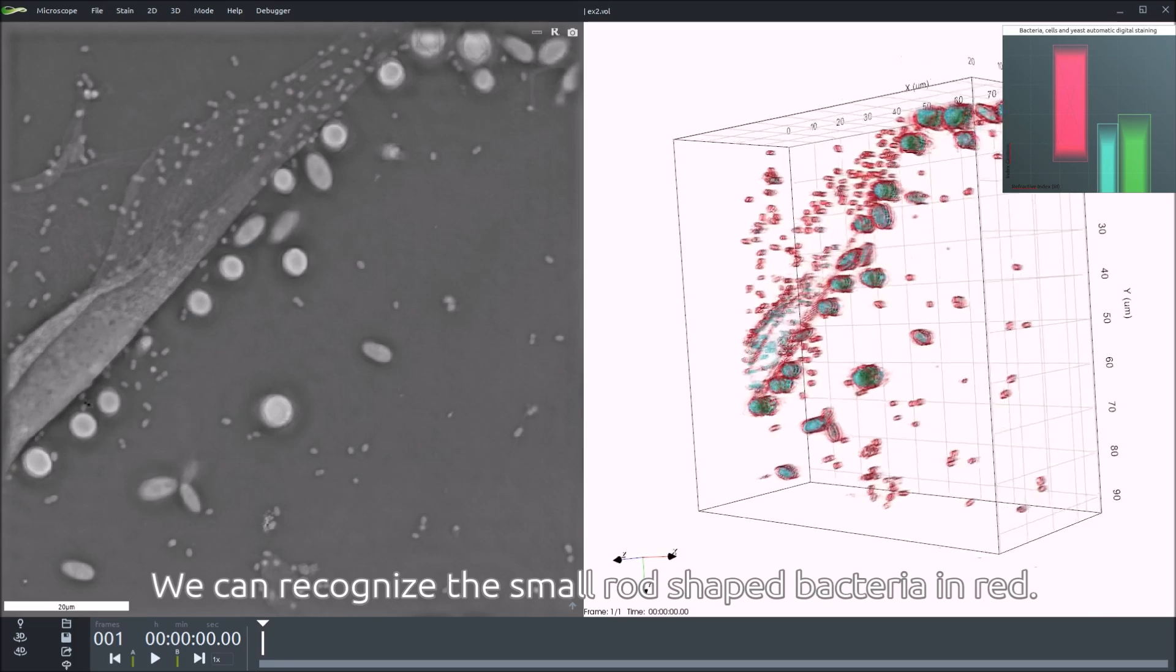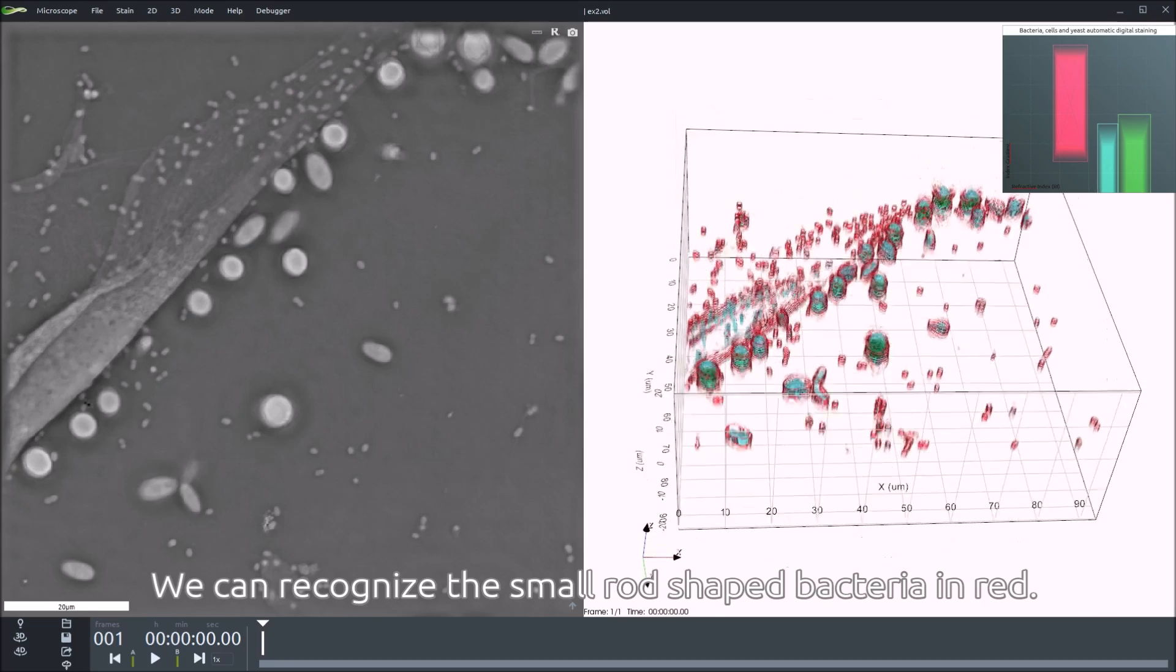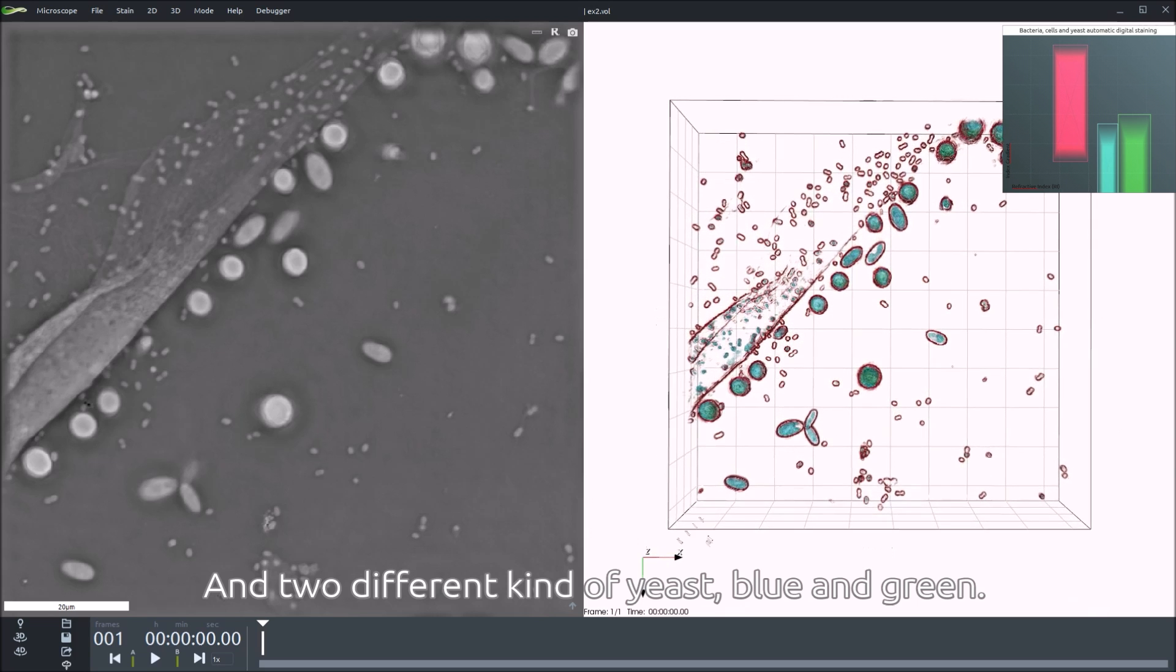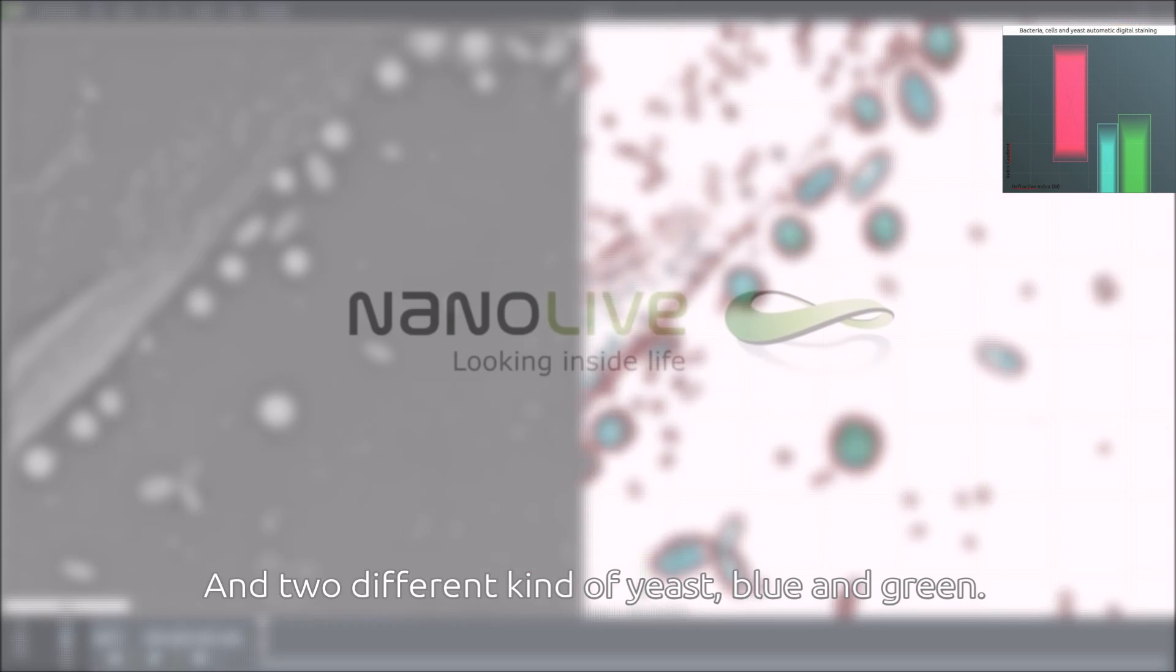We can recognize the small, rod-shaped bacteria in red, and two different kinds of yeast, blue and green.